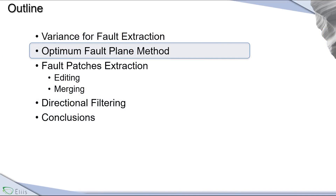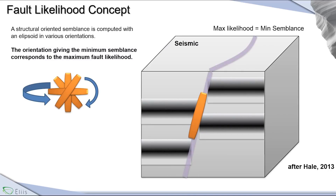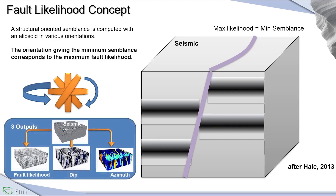It's what we call the best fault plane method. We start from the work of Dave Hale from Colorado School of Mines, who worked on fault likelihood. The maximum likelihood is the minimum of variance. On the seismic, you rotate a disk in different directions for dip and azimuth to find the minimum of semblance. Thanks to this attribute, we obtain three different outputs from the seismic: the fault likelihood, the dip, and the azimuth. We start from this way of fault extraction.